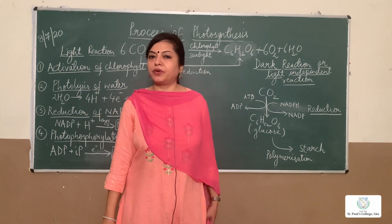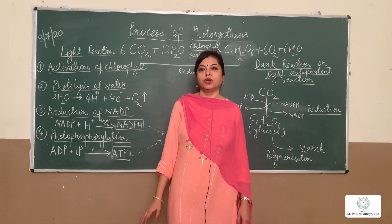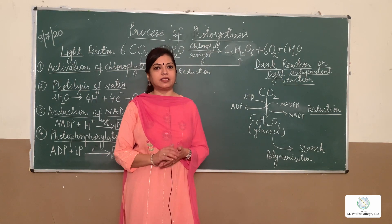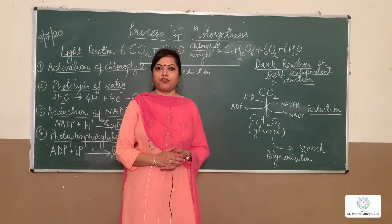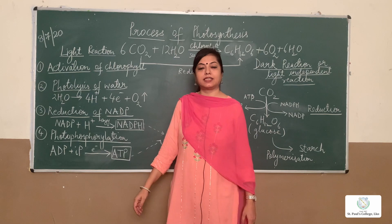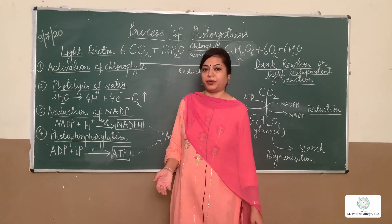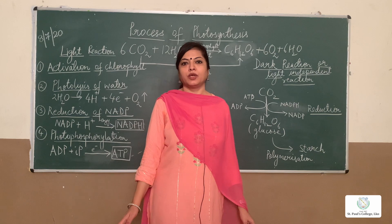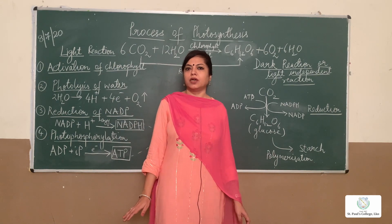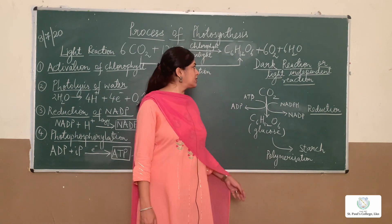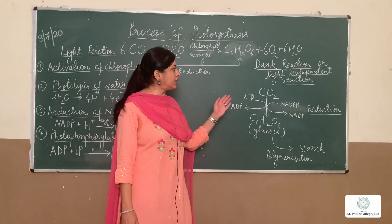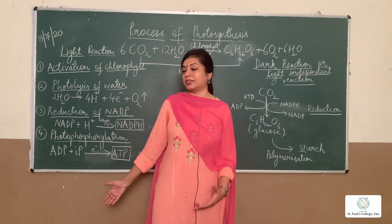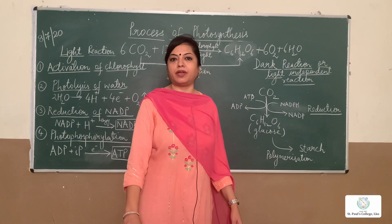We previously discussed the structure of the chloroplast. Inside the chloroplast there are disc-like structures called thylakoids, which act as the site for the first phase of photosynthesis — the light reaction. If asked the site of light reaction, write thylakoid or grana. The entire chloroplast is filled with a matrix called stroma, which is the site for the second phase — the dark reaction, or light-independent phase.